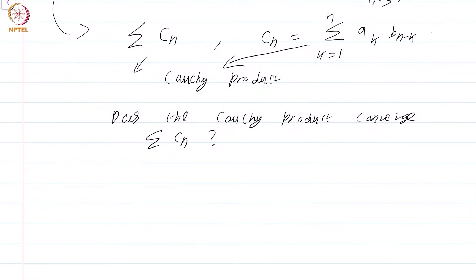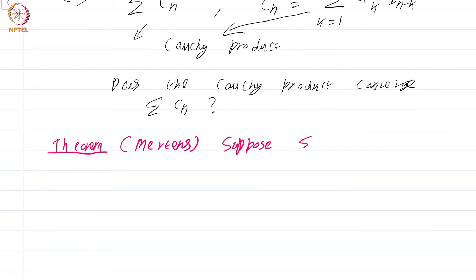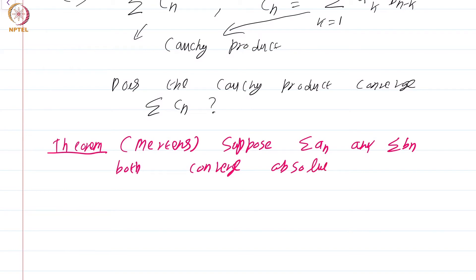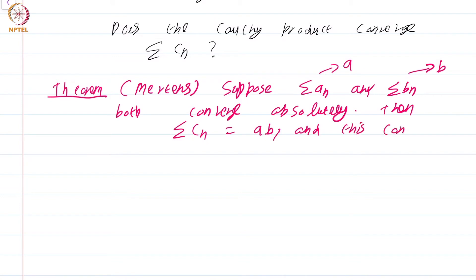I am going to prove a very simple result. This is not the most general result along these lines, but it is more than sufficient for our purposes. Theorem — I believe this is due to Mertens, though what Mertens proved is a more general result. Suppose summation aₙ and summation bₙ both converge absolutely to a and b respectively. Then summation cₙ equals ab, and this convergence is absolute.